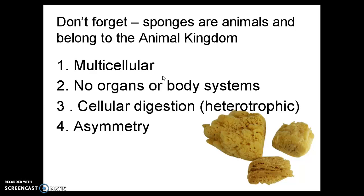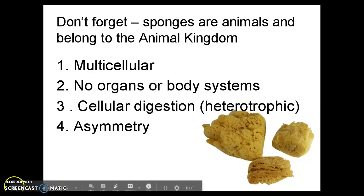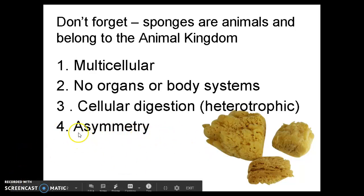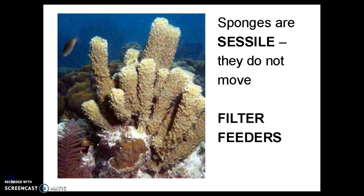They do cellular digestion. They are heterotrophic — they do need to eat. And they have asymmetry, so they are not radially symmetrical or bilaterally symmetrical; there's no real rhyme or reason to how they arrange themselves. They are asymmetrical. Sponges are sessile, meaning they do not move, and all are filter feeders.